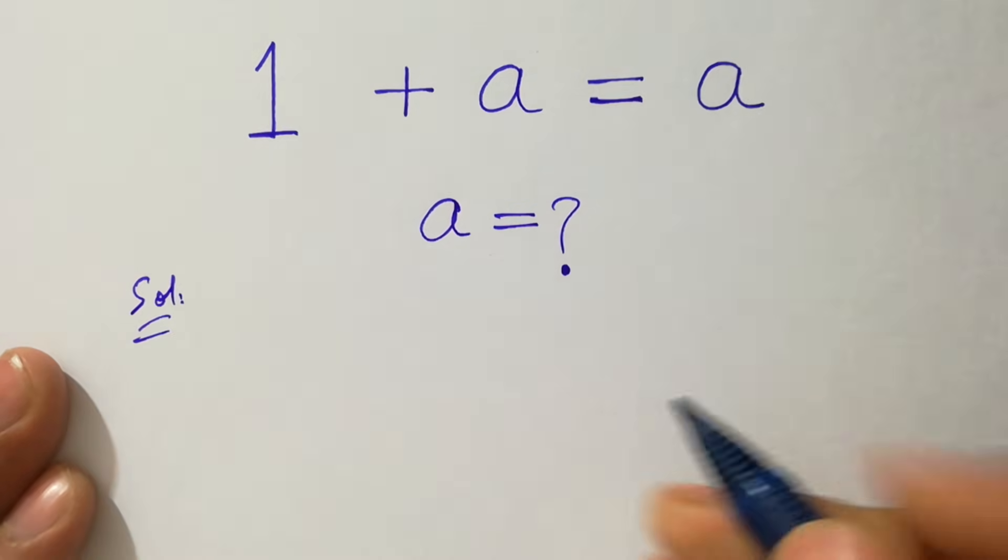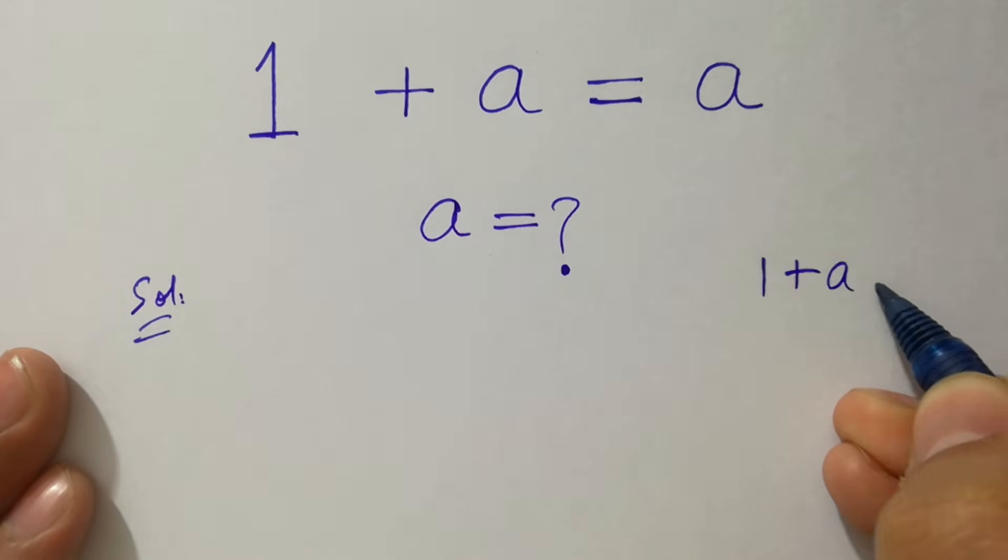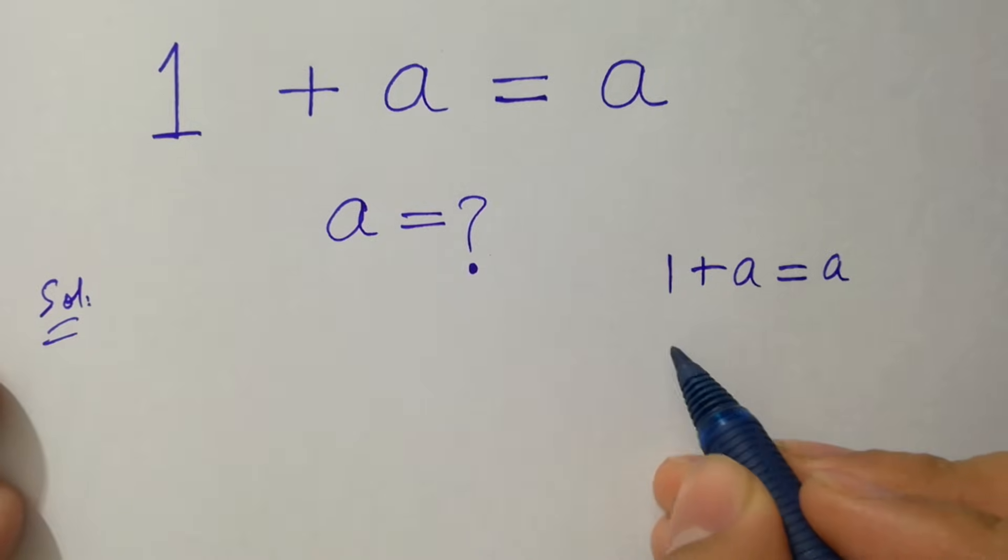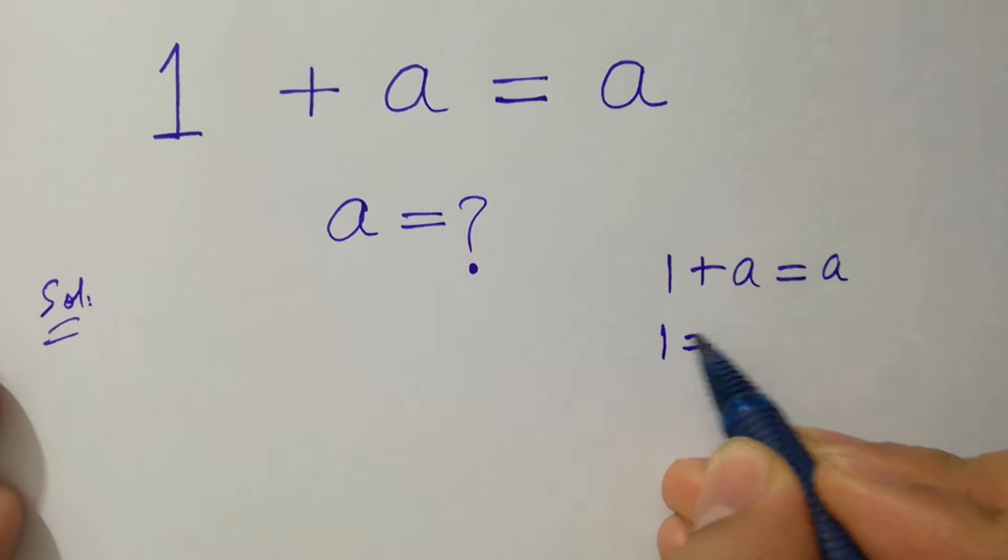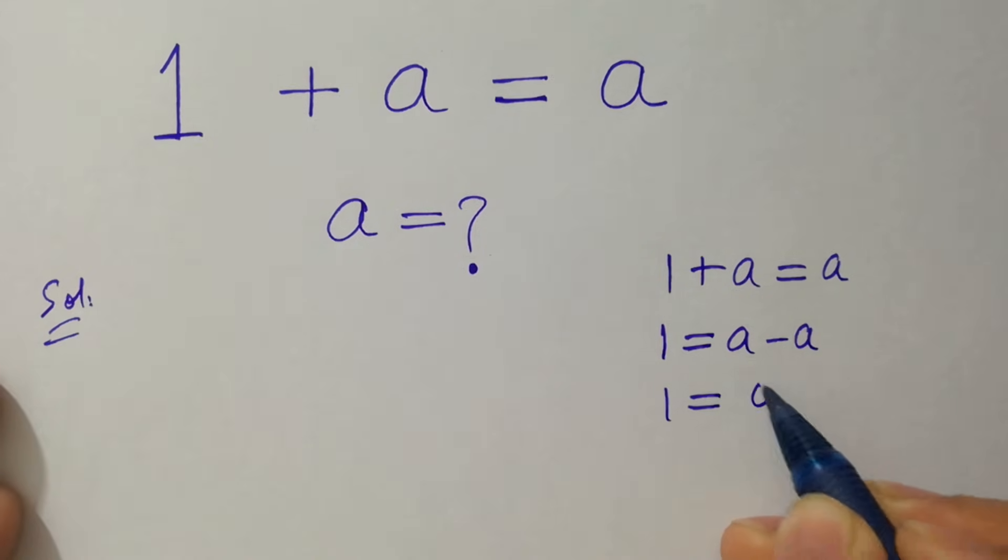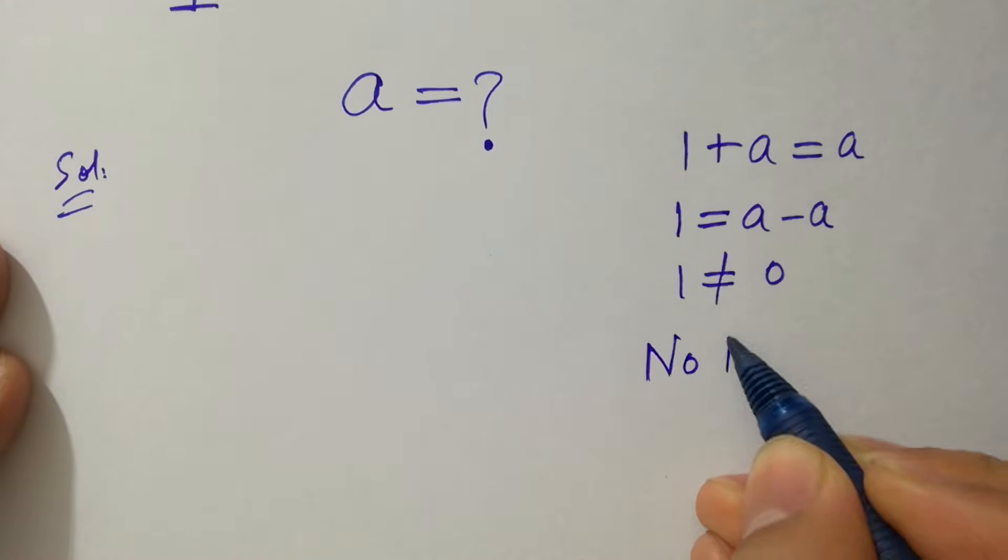If you see this problem, 1 + a = a, then we have 1 = a - a. a - a is 0, which means 1 does not equal 0. So this equation has no real solution.